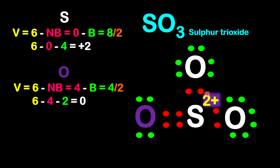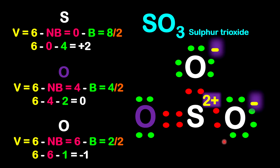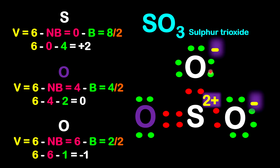For oxygen — this oxygen is different from the other 2 — we have 6 valence electrons, 4 non-bonding electrons, and 4 bonding electrons. So 6 minus 4 minus 2 gives 0. For the other 2 oxygen atoms, which are the same in terms of bonding: 6 valence electrons from group 6, 6 non-bonding electrons, and 2 bonding electrons, so 2 divided by 2. So 6 minus 6 minus 1 equals negative 1. Each has a negative 1 charge, and so 2 positive and 2 negative gives a total of 0 charge overall. But this structure is unstable as it is, so our objective is to make it more stable.